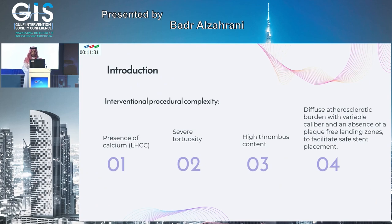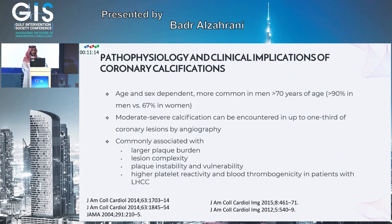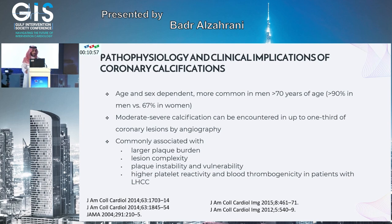Procedure complexity involves many factors, including the presence of calcium, severe tortuosity, high thrombus content, and diffuse atherosclerosis burden. Dr. DiMario spoke about calcium and its association with worse outcomes. We know that heavily calcified lesions are more common in men over 70 years of age — 90% in men and 67% in women.